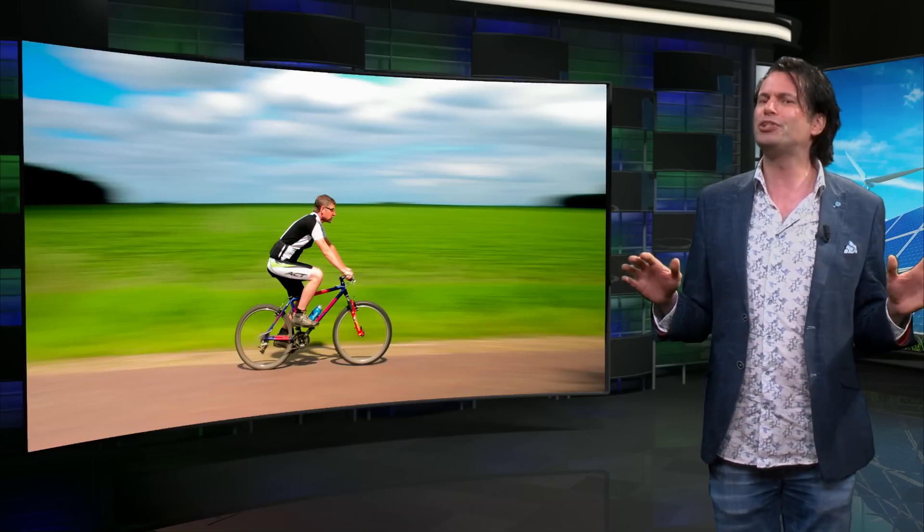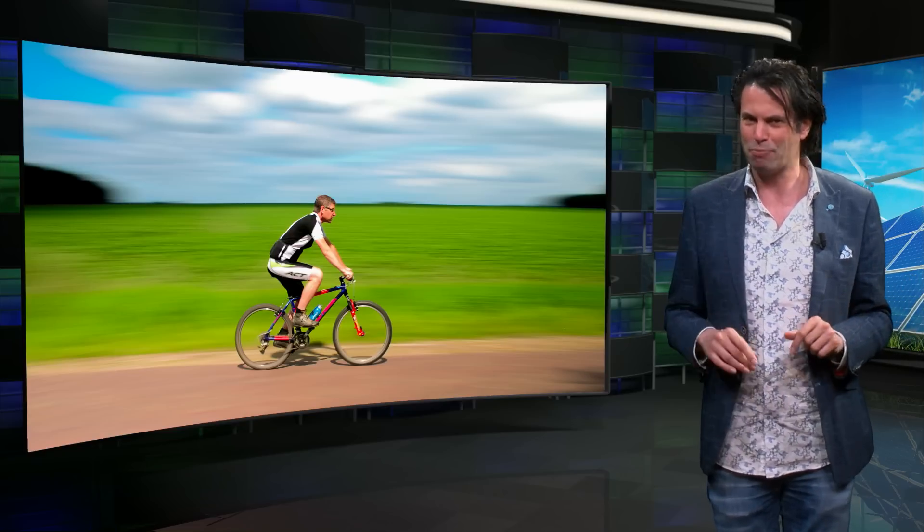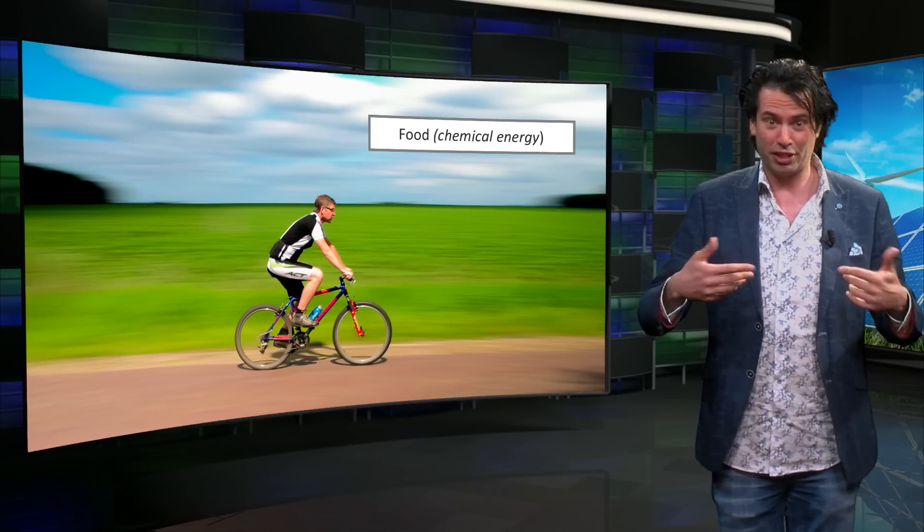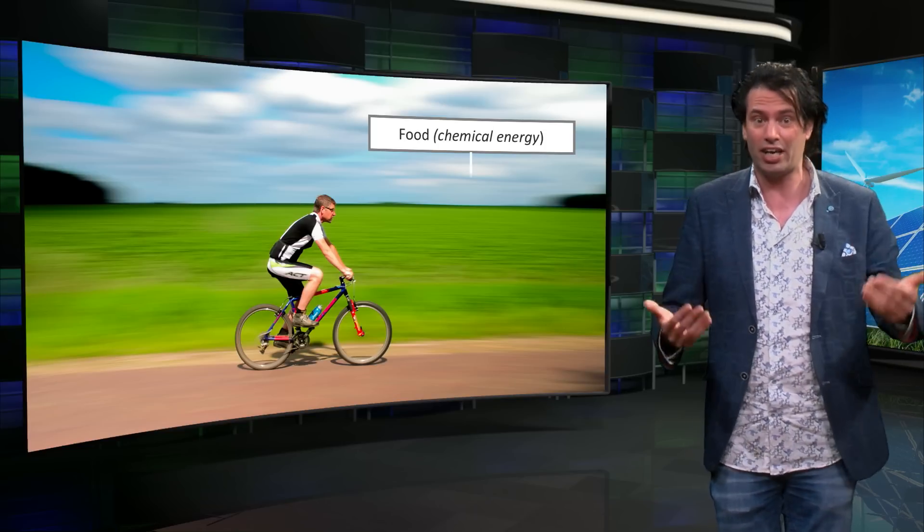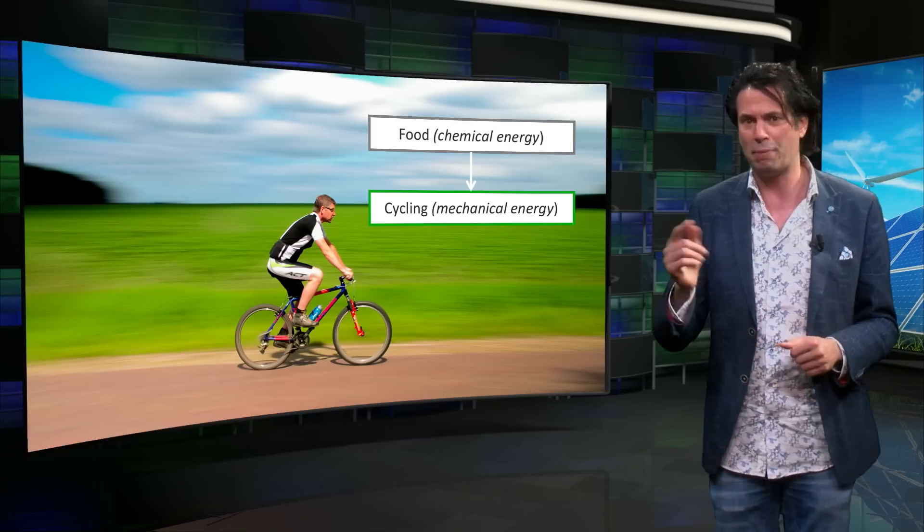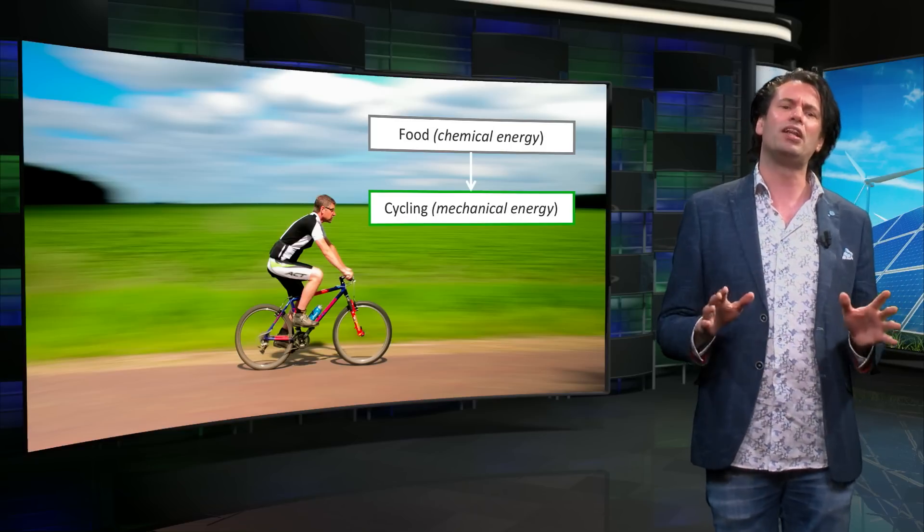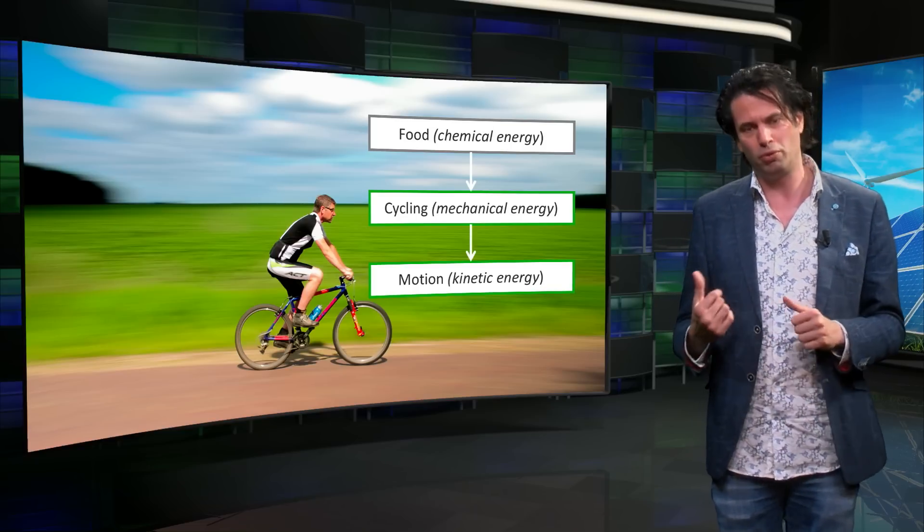A bicycle uses a different fuel and engine to create motion. The chemical energy stored in food is converted by our body, which is the engine, into mechanical energy which we use to turn the pedals. The pedals and gears turn the wheel and impart motion to the bicycle.